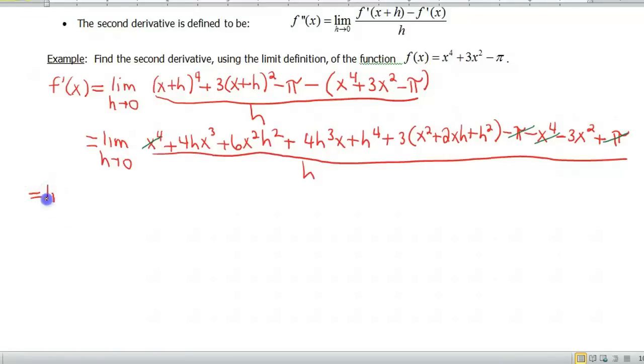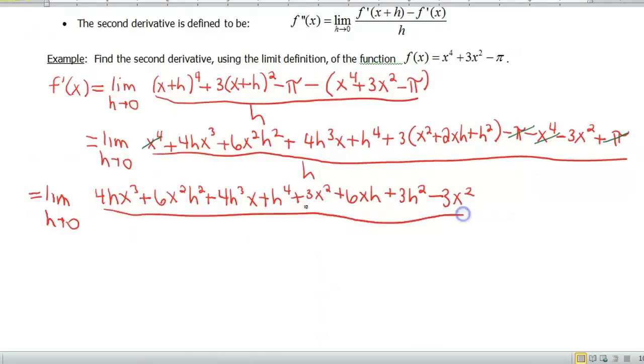Okay, let me start back here this time. We have the limit h approaches 0. So I have 4hx cubed plus 6x squared h squared plus 4h cubed x plus h to the fourth. And again, at any point it might be a good idea just to pause the video and see kind of where your algebra skills are at as well on this. Then you can come back and watch me and make sure that we agree. So distribute my 3 through, that'll give me a 3x squared plus a 6xh plus a 3h squared, and then minus 3x squared.